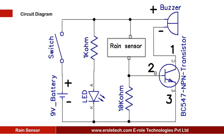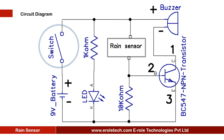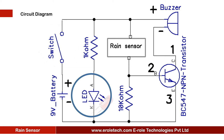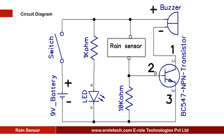Before making the project, we will understand its circuit diagram. This is a 9V battery to power up the circuit. This is an on-off switch, which is used to start or stop the project. This is a power supply indication LED. This is a current limiting resistor to protect the LED from high current and voltage.